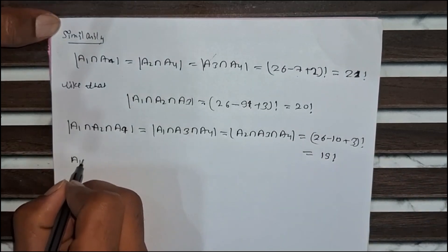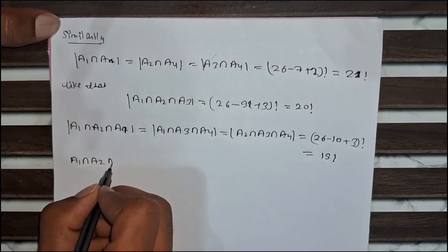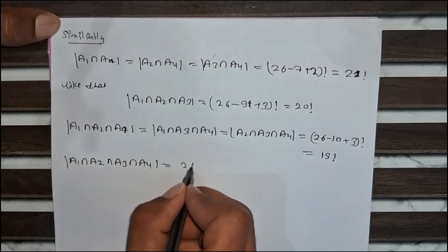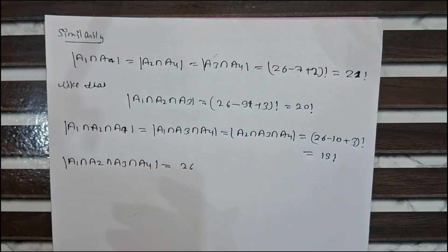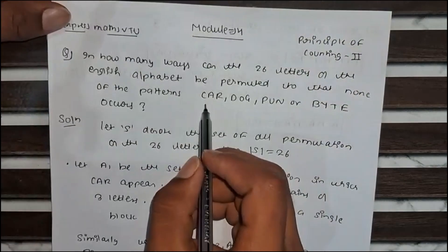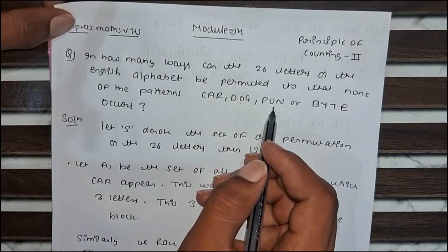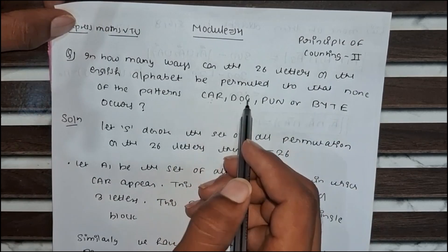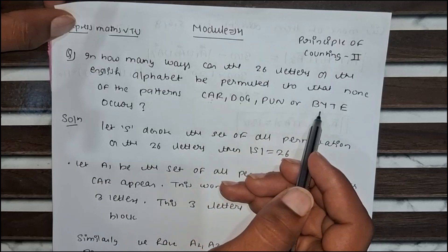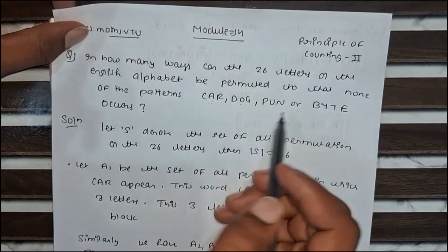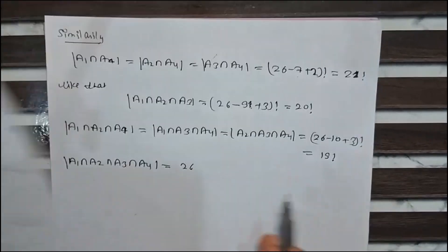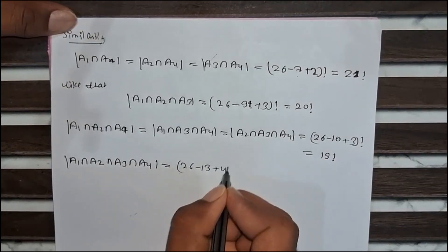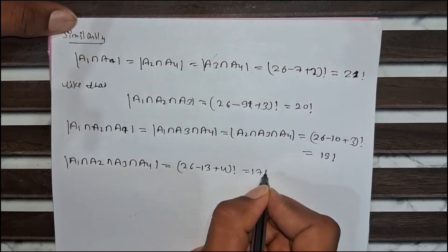Now for A1 ∩ A2 ∩ A3 ∩ A4: 'car' has three letters, 'dog' has three letters, 'bone' has three letters, and 'bite' has four letters — thirteen letters total forming four blocks. So 26 minus 13 plus 4 factorial equals 17 factorial.